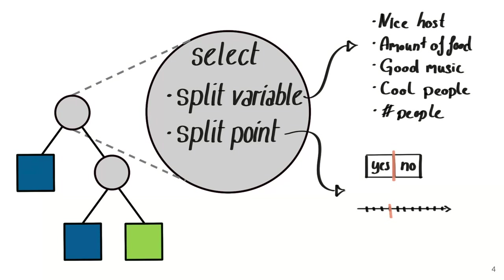So yes or no for example, or other category splits. Or if we have a variable with many categories that are on a scale, then we would have the split point somewhere on that scale.